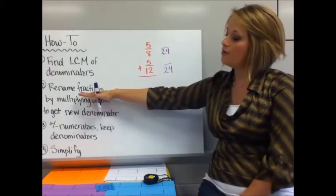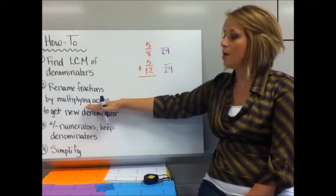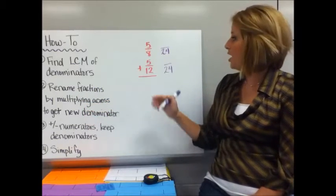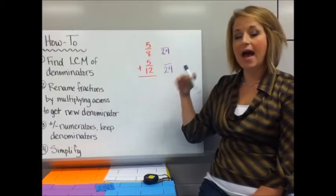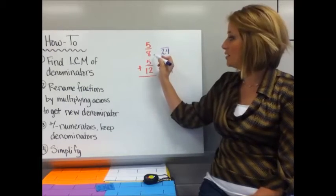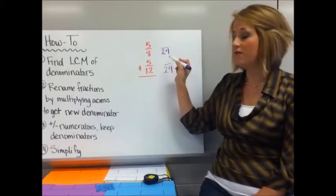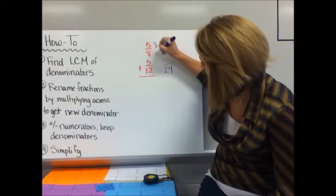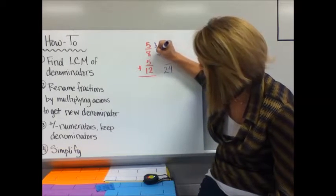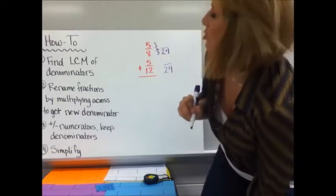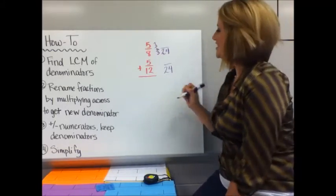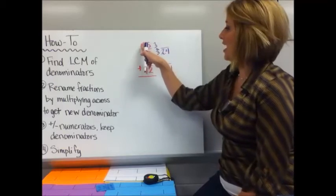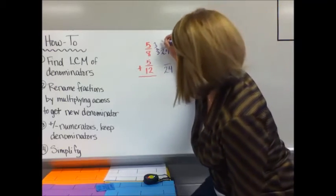Second step: I'm going to rename those fractions by multiplying across to get that new denominator. So let's look at 5/8. I ask myself, what do I need to multiply 8 by to get 24? And that's 3. So I'm going to multiply the top by 3 and the bottom by 3. So then I'm going to multiply across. 5 times 3 is 15.